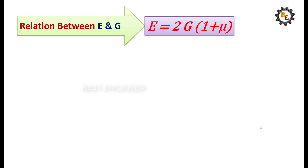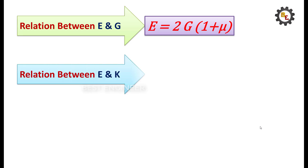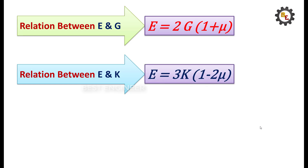Relationship between Young's modulus E and bulk modulus K: E equals 3K into (1 - 2mu).